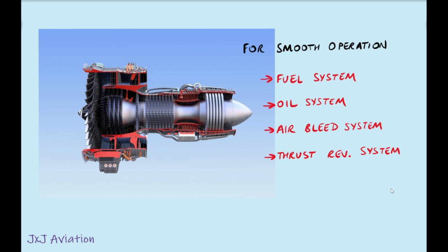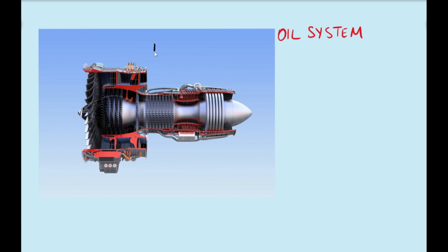The oil system in an aircraft engine is used to lubricate different components and bearings in different places.